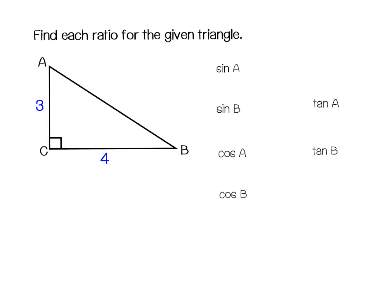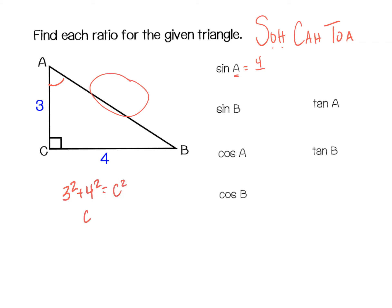The first thing we're going to do is just identify what sides we're comparing. First I'm going to find the sine of A — that's my point of reference. Sine is opposite over hypotenuse. The opposite side of A is 4, but the hypotenuse isn't labeled. Since it's a right triangle, we can use the Pythagorean theorem: 3 squared plus 4 squared equals 5 squared — it's a 3-4-5 triangle. So the sine of A is 4 over 5. For the sine of B, the opposite side is 3 and the hypotenuse is still 5, so sine of B is 3 over 5.